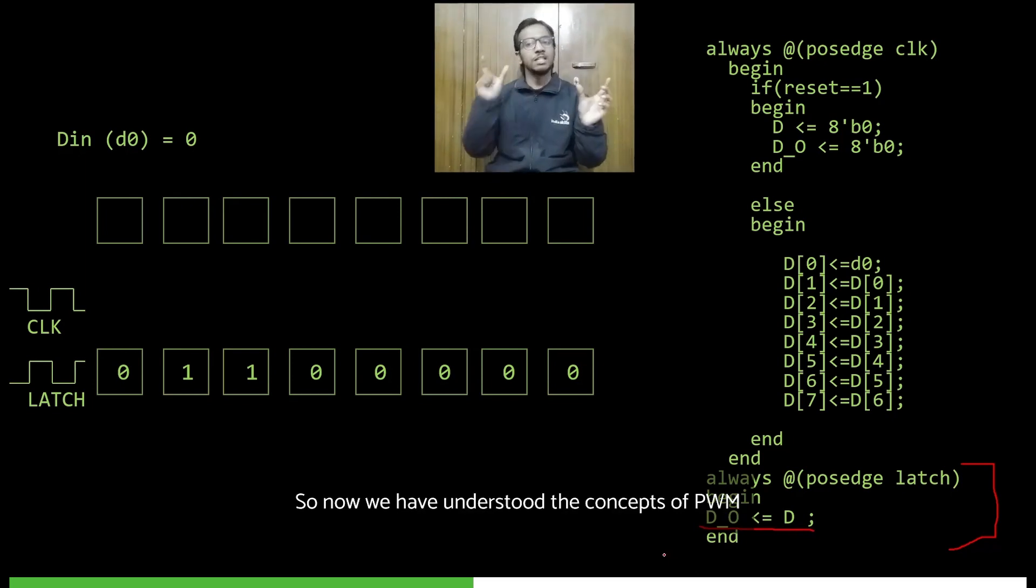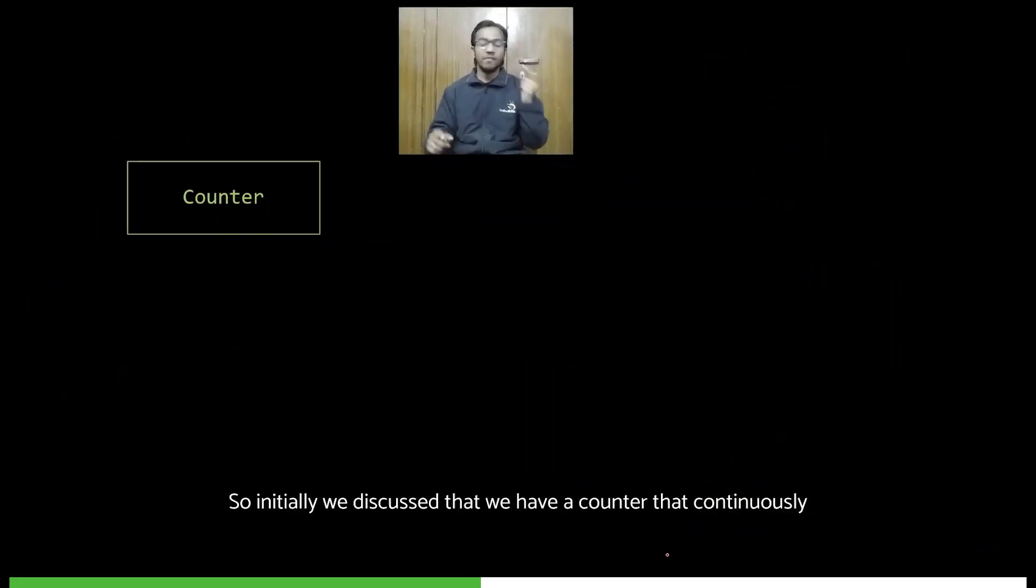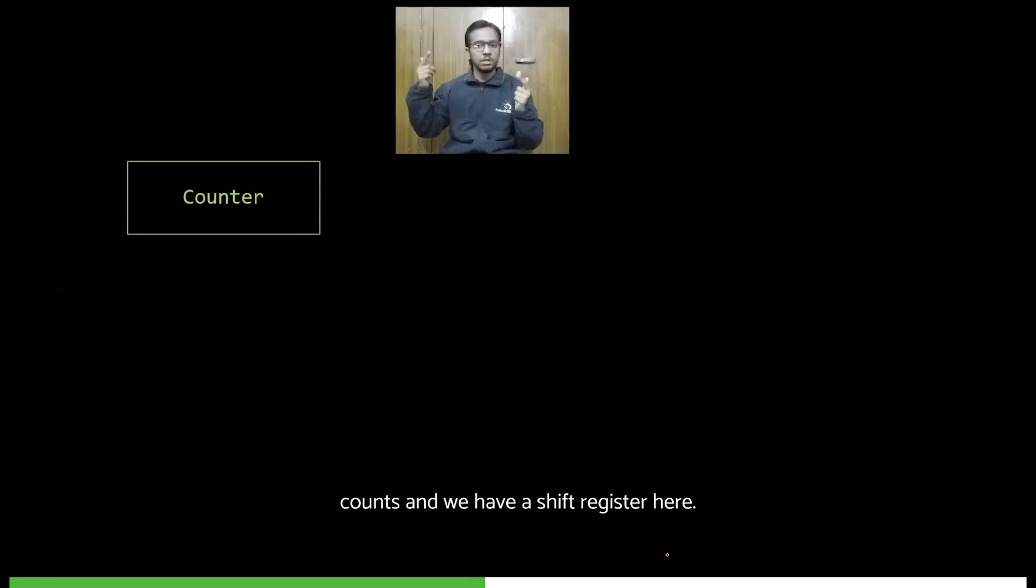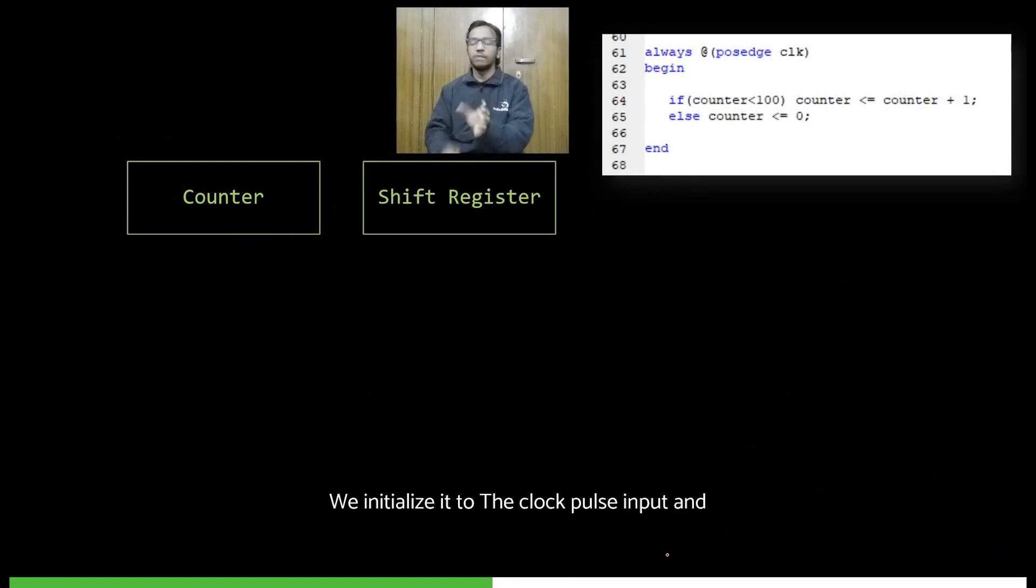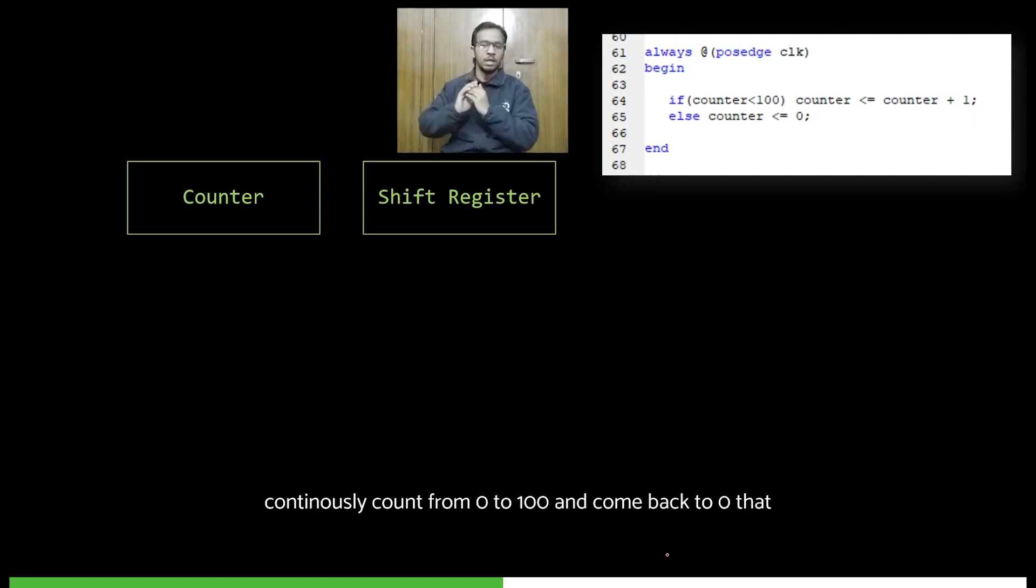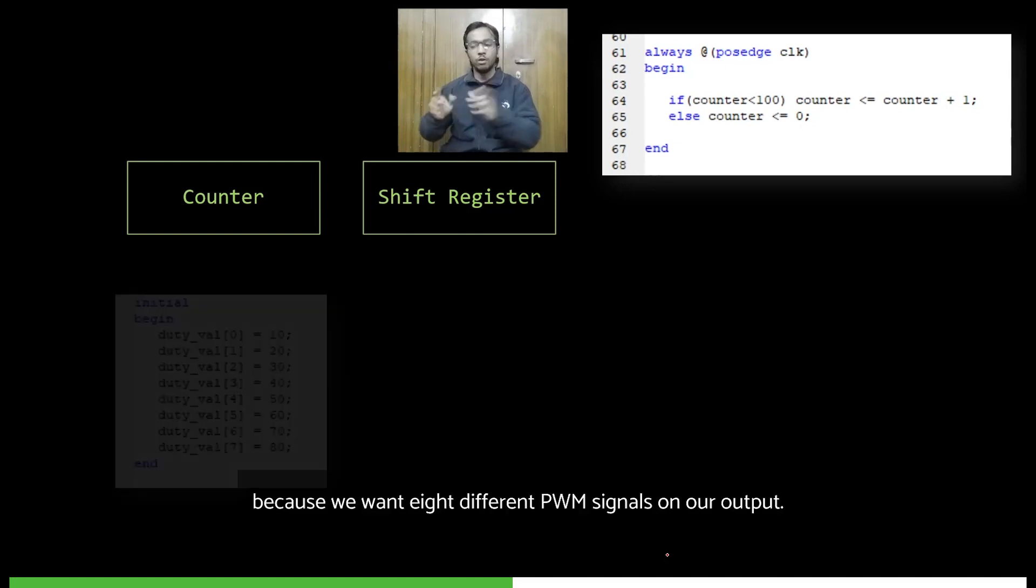So now we have understood the concepts of PWM and the concepts of shift register. Now let's combine both of them. Initially we discussed that we have a counter that continuously counts, and we have a shift register. Here we have the Verilog code for the counter. We initialize it to take the clock pulse input and continuously count from zero to 100 and come back to zero. That is our counter. Now here we initialize eight duty cycle values because we want eight different PWM signals on our output using just one counter.